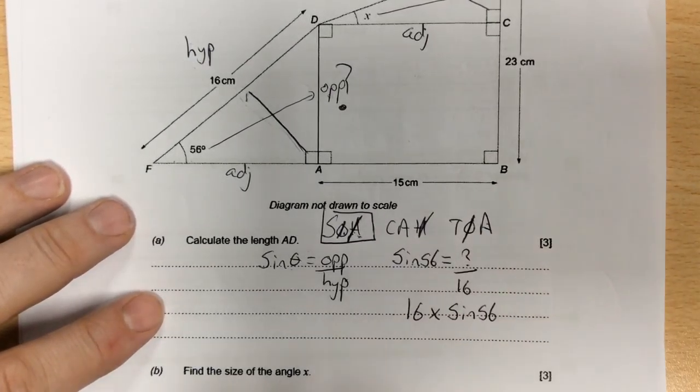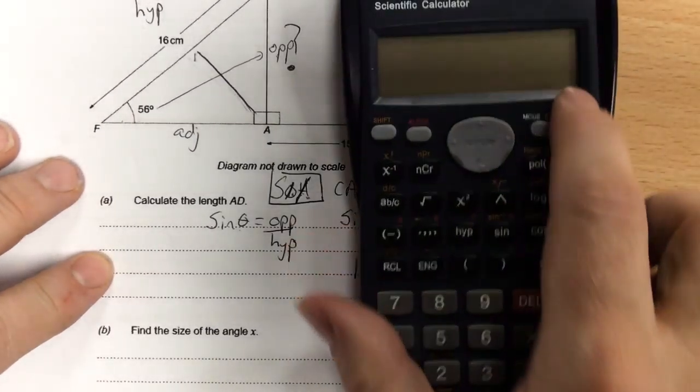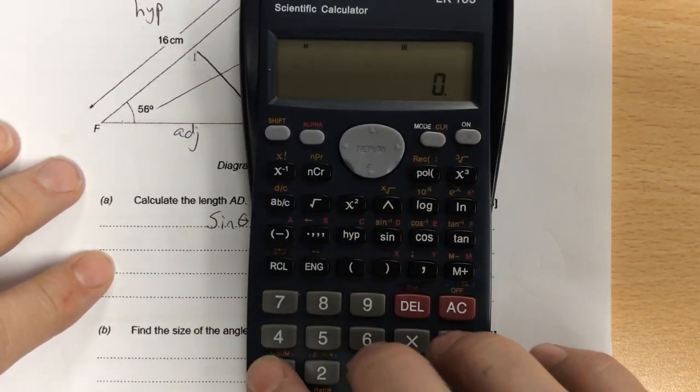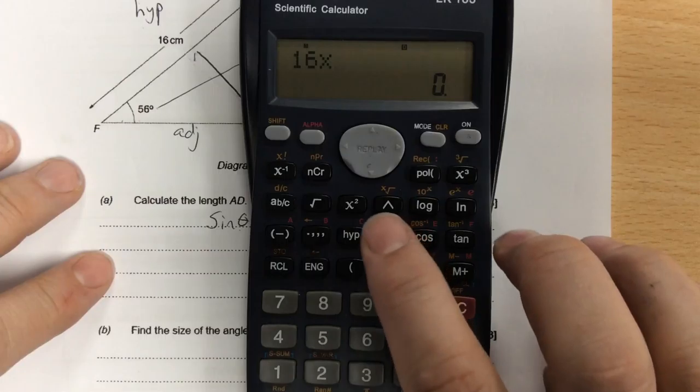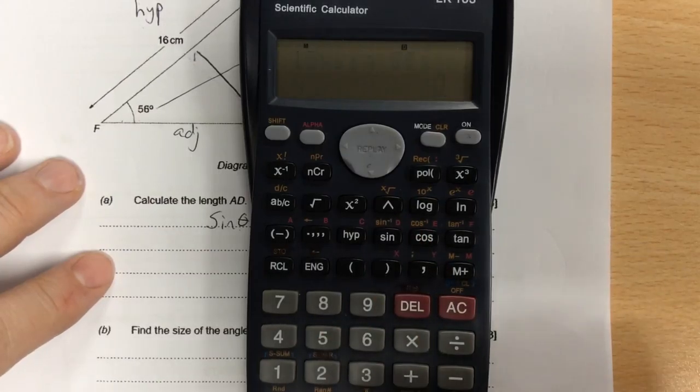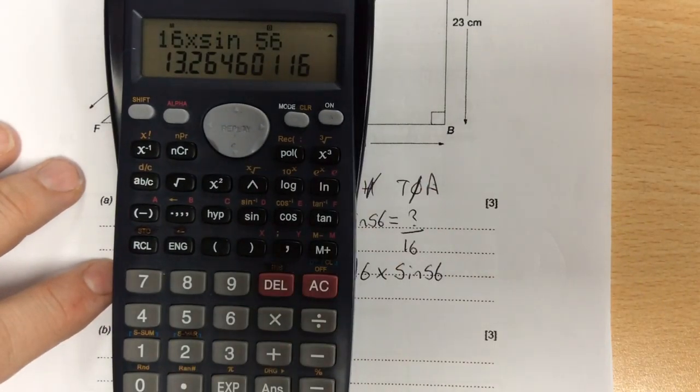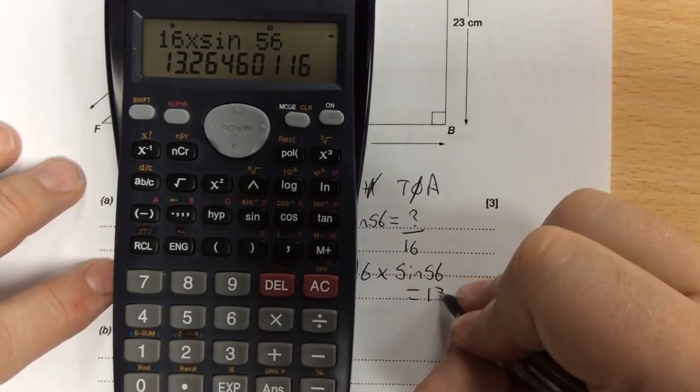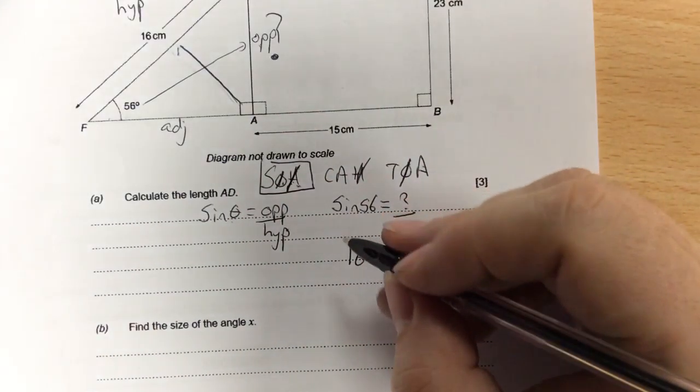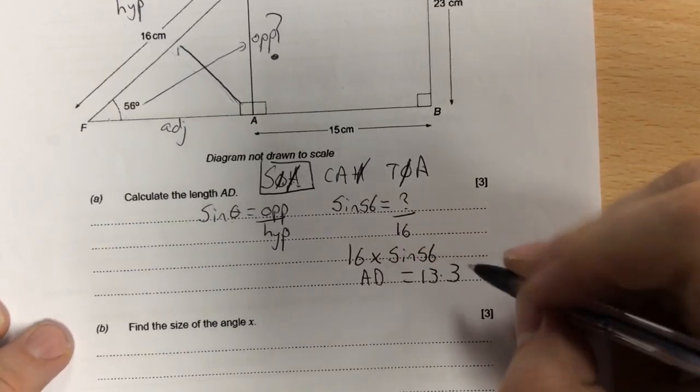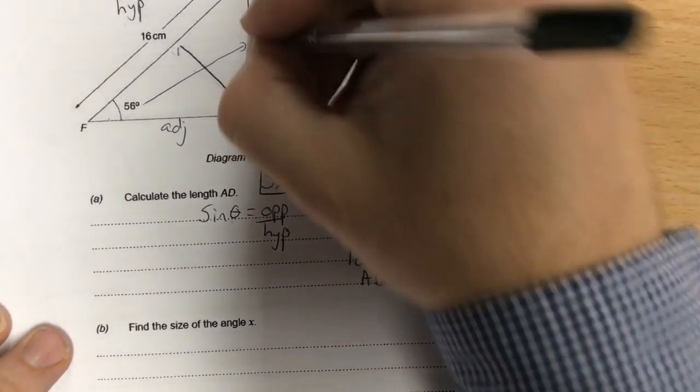Putting this on the calculator, you type 16 times sin 56 equals, and to one decimal place is 13.3. So AD is 13.3 centimeters.